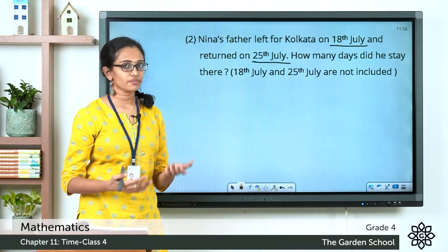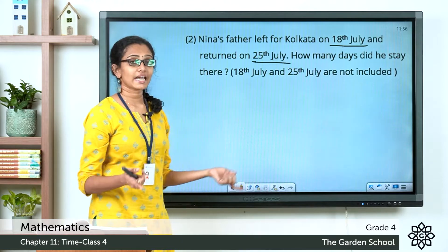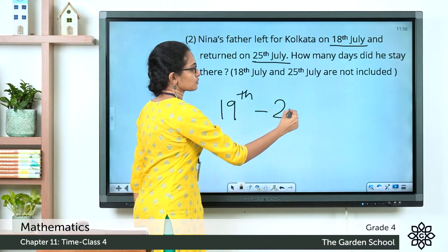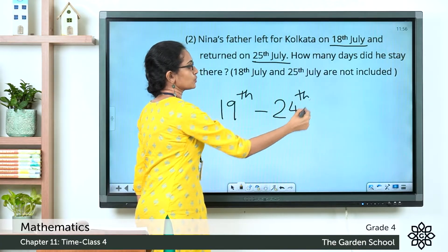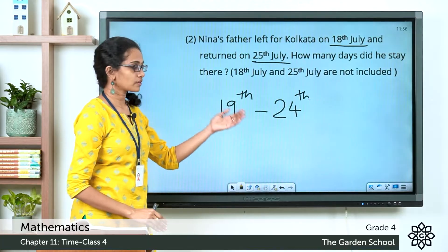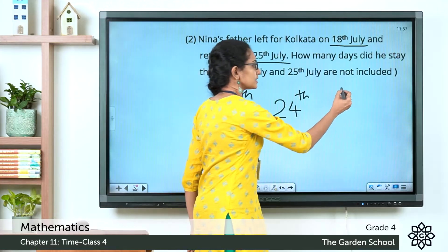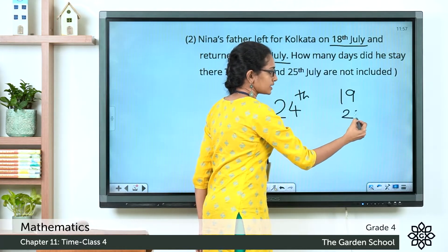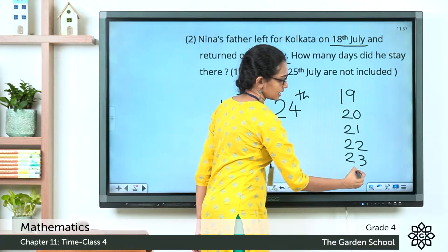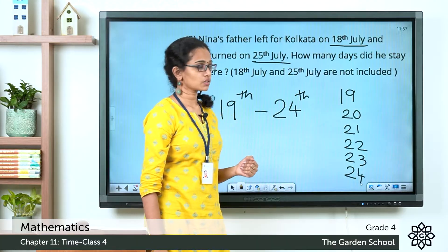So if we exclude those two days, he must have stayed from the 19th of July to the 24th of July. He was there on the 19th, 20th, 21st, 22nd, 23rd, and 24th of July — those were the days he stayed in Kolkata.